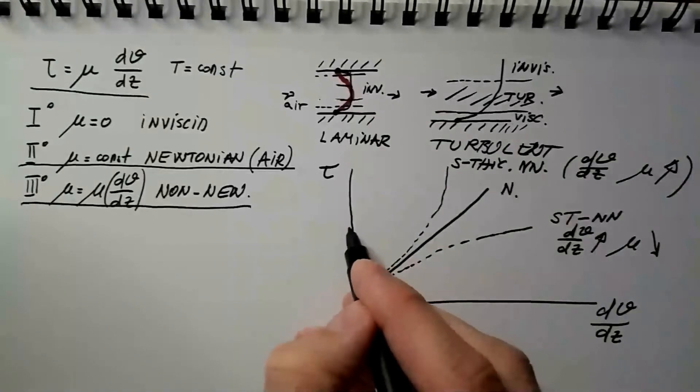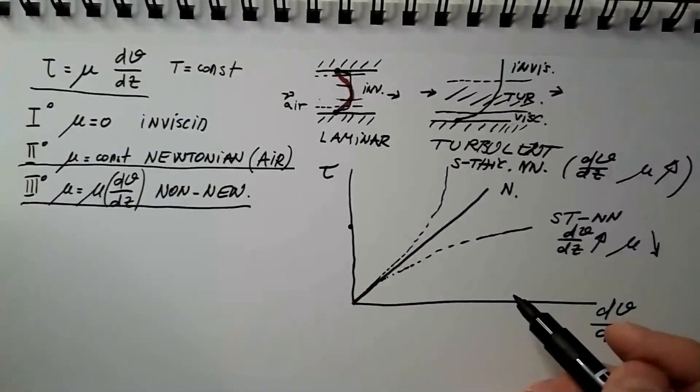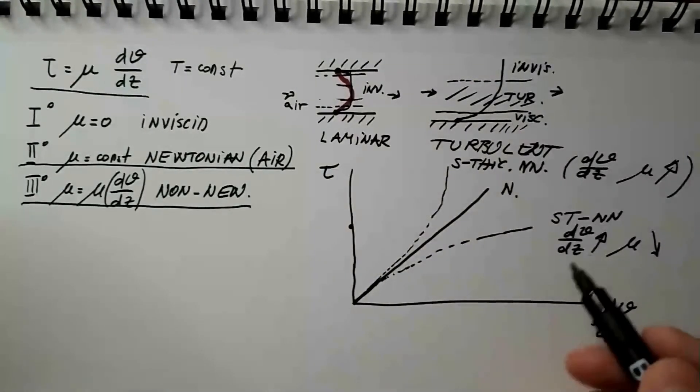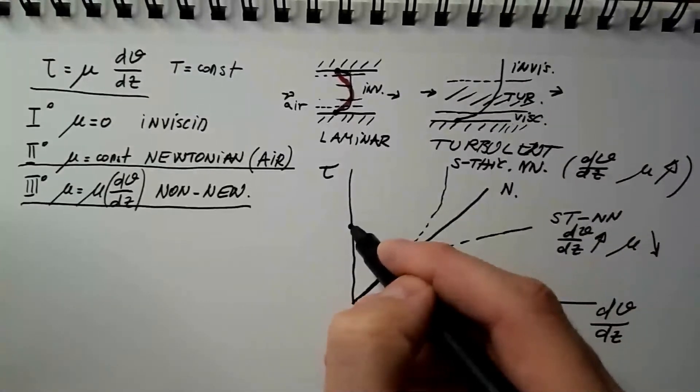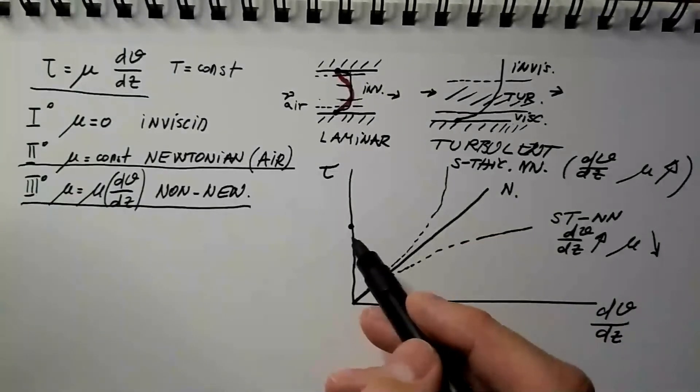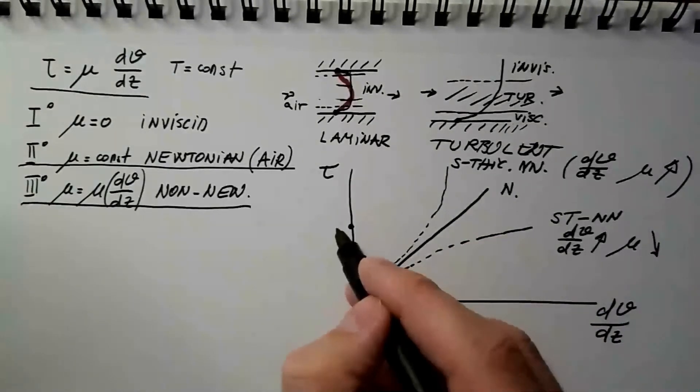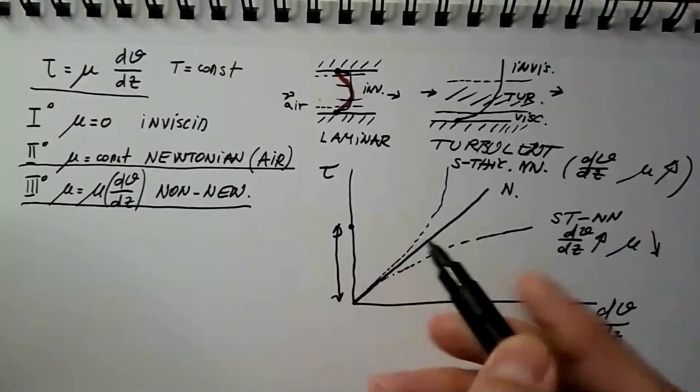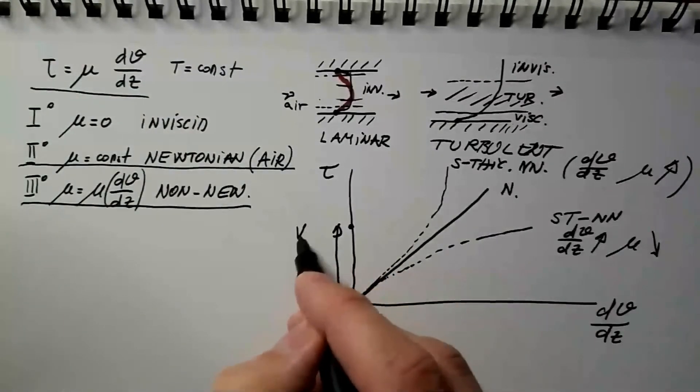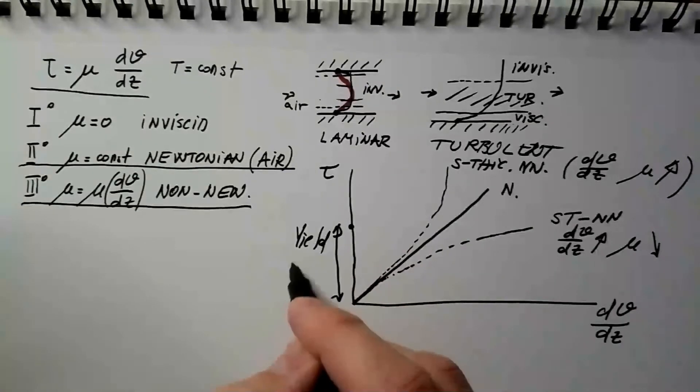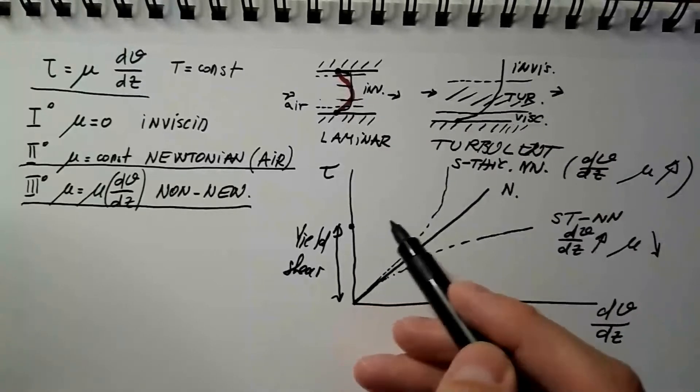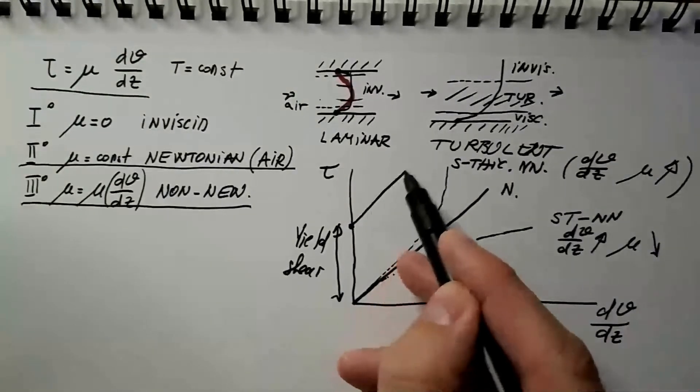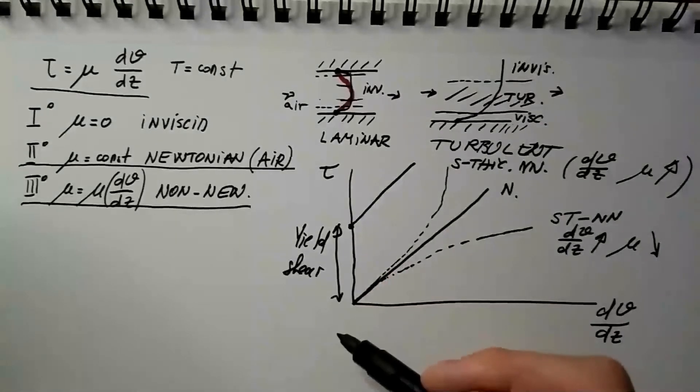And the third class of non-Newtonian fluids are called Bingham plastic, named after Elgin Bingham, who discovered them. And these fluids are really not fluids until you apply a certain shear stress. And this shear stress is called offset, or the technical term is yield shear. Yield shear because after this shear, the fluid-like substance yields and becomes indeed a fluid, and then behavior is typically linear, similar to Newtonian fluids. And we will see some examples.